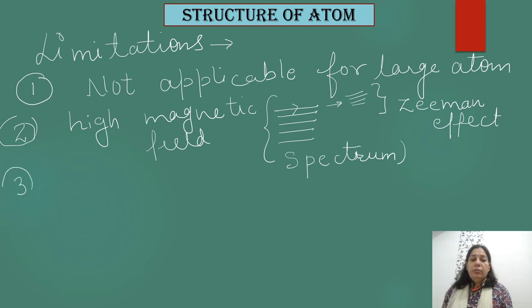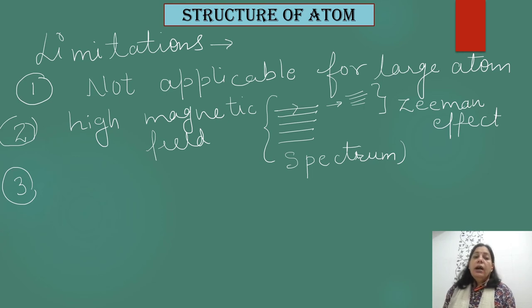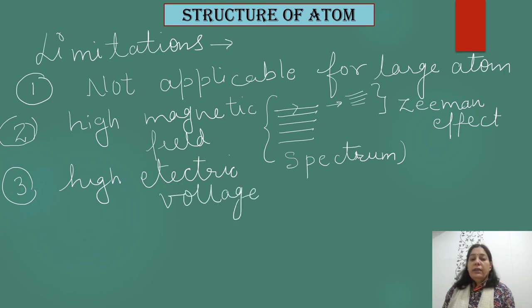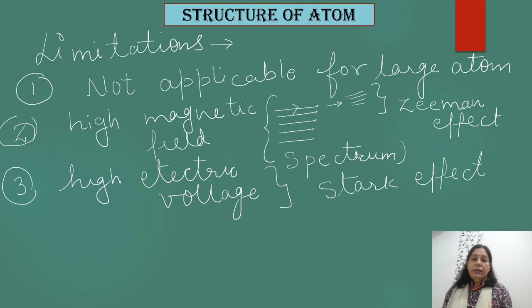The third limitation is the Stark effect. In the same scenario, when the spectrum formed by electron emission is subjected to a high-voltage electric field, the spectral lines again split into minute lines. Bohr's model could not explain why these lines split when an electric field is applied. This phenomenon is called the Stark effect, and it could not be explained using Bohr's model.